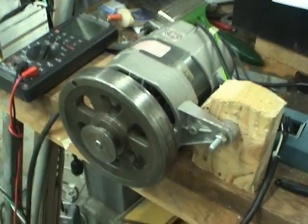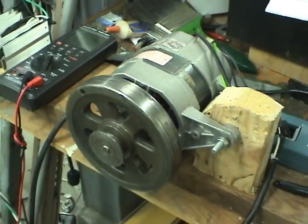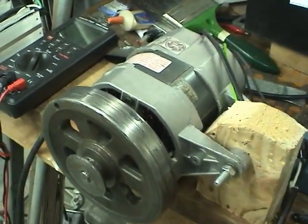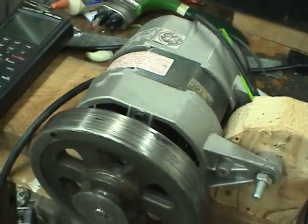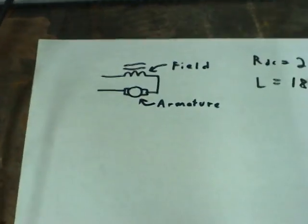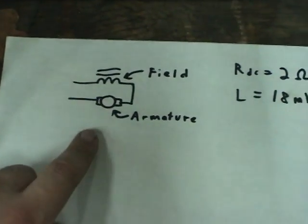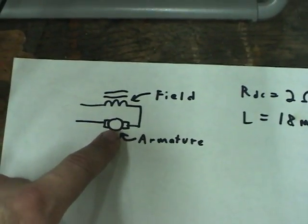You may be asking, why is the performance of the motor so much better on DC than it is on AC? And the basic answer to that is because of the inductance of the field winding. If you look at the equivalent circuit of the motor, it's got an armature, the piece in the center, you can see in here,